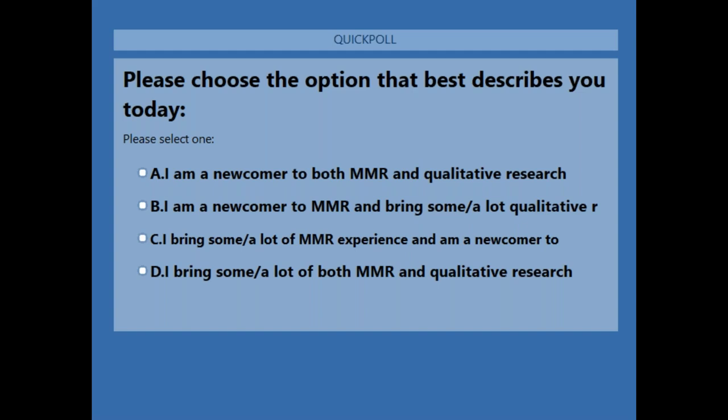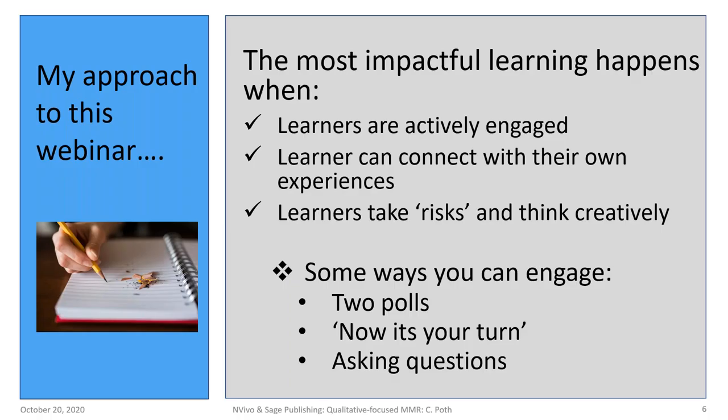The results are in: 38% chose A — newcomer to both; 38% chose B — higher qualitative, lower mixed methods; 8% chose C — higher mixed methods; and 16% chose D — a fair bit of both. This helps me know who's coming in and why that matters for this webinar.